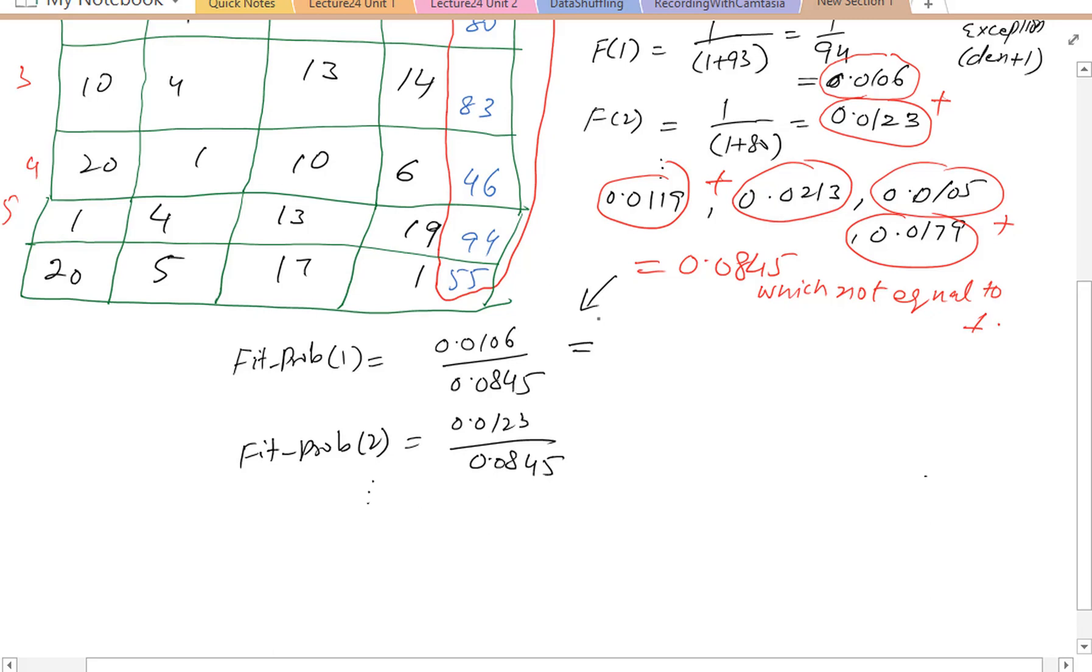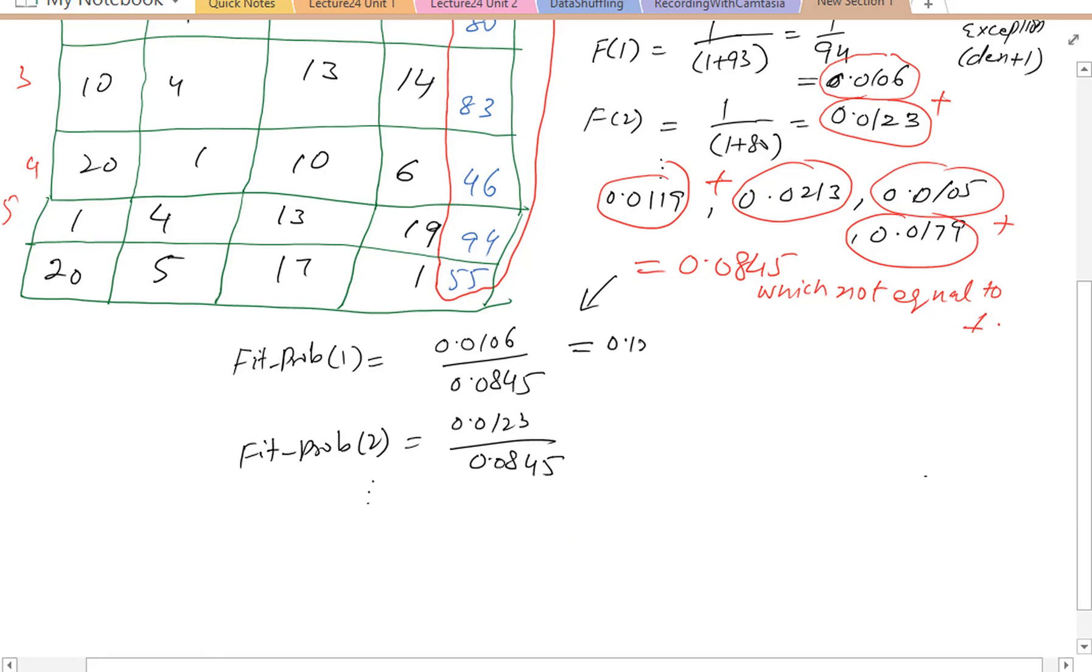We get 0.1254 for the first chromosome, 0.1456, 0.1408 and so on. Now some of these probabilities are higher than others, which means these are fitter individuals compared to the others.